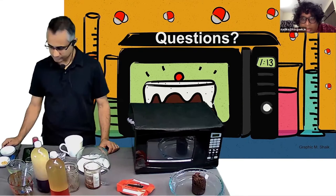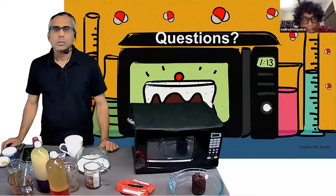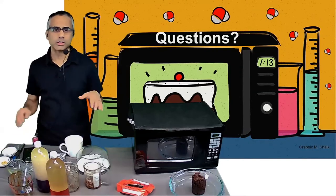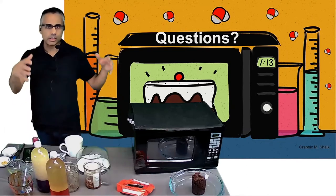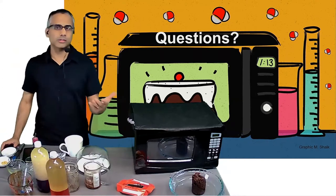Dave asks: many bakers prefer OTG or conventional oven over microwave — is there any technology that combines both? Yes, there are some hybrid ovens that have both a microwave function and other heating elements. These are just two different technologies — a convection oven circulates air inside, like an air fryer.